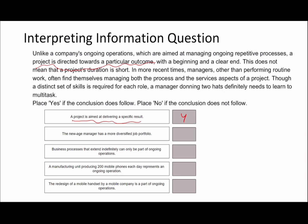The second statement: 'The new age manager has a more diversified job portfolio.' 'Manager' is probably a safer keyword than 'new age,' which could be switched out. So we're looking for something about managers. The passage says: 'In more recent times' — you can see the synonym: new age equals more recent times — 'managers, other than performing routine work, find themselves managing both the process and service aspects of a project. A distinct set of skills is required for each role. A manager donning two hats definitely needs to learn to multitask.' I would say yes, because it says they manage both the process and service, and it says they need to learn to multitask.